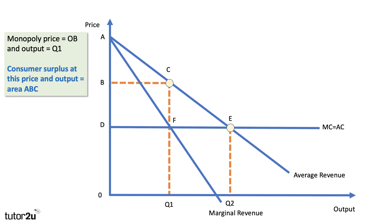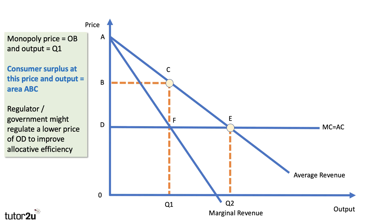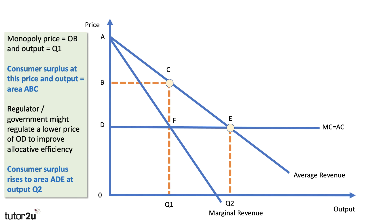It could be the case that the regulator or the government decides to nationalise the business, or the regulator may impose a lower price in a bid to improve consumer welfare. So let's say the regulator imposes a lower price of OD to improve allocative efficiency — price OD is where marginal cost and the average revenue curve meet, which is the output Q2 of allocative efficiency. If they do that, monopoly profit is essentially regulated away. The consumer surplus rises to area ADE at output Q2. So if you get a question on price regulation of a monopoly, don't be afraid to bring consumer surplus into your analysis.